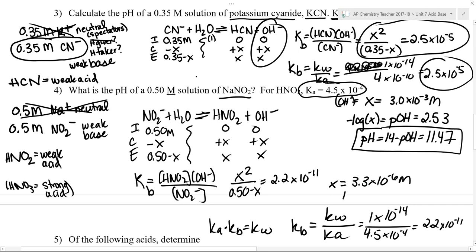And if I take the log of that, that's going to give me the pOH, which is 5.48. And the pH is 14 minus the pOH, so that is going to be 8.52.